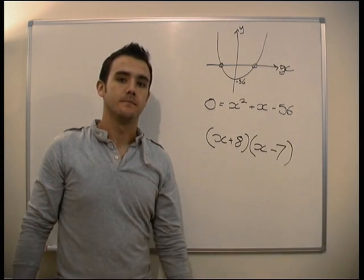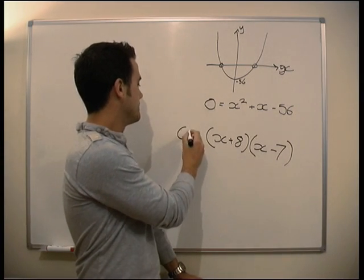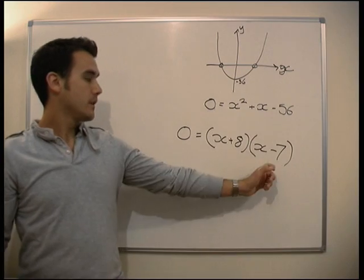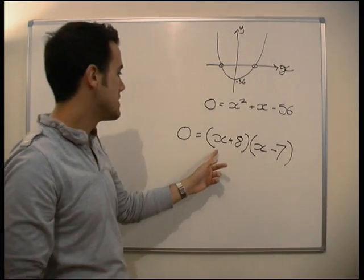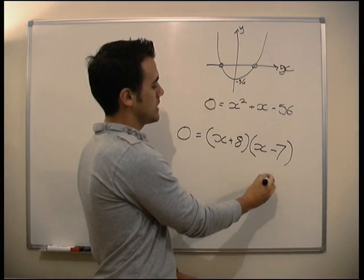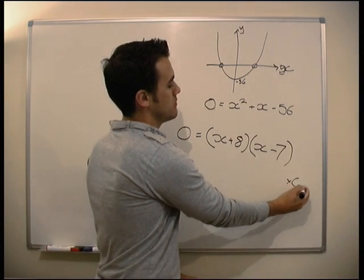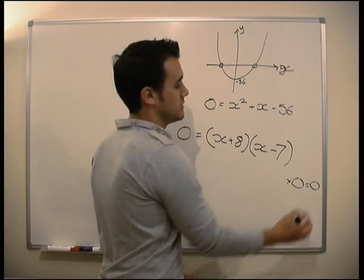So we factorised it. We need this whole thing to equal zero. And we need two solutions. It's nice and easy. Look at this. Remember, anything times by zero must equal zero.